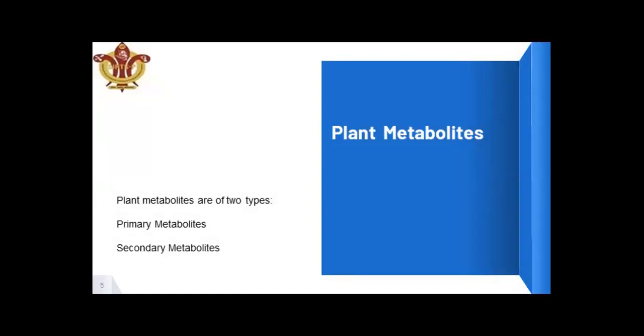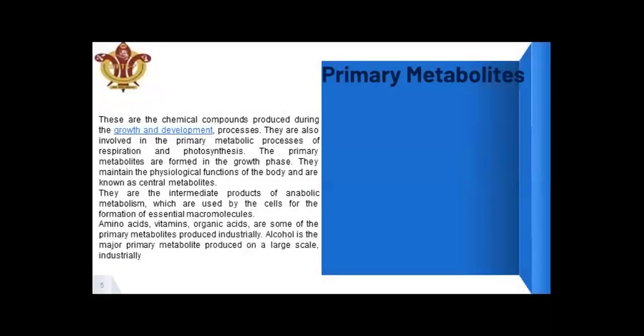Plant metabolites are of two types: primary metabolites and secondary metabolites. Primary metabolites are primary products required for the growth and development of the organism itself. They are involved in primary metabolic processes like respiration and photosynthesis, and are integral products of anabolic metabolism used by the cell for essential micromolecule formation. Examples include vitamins, organic acids, and some primary metabolites produced industrially.